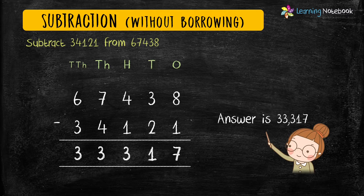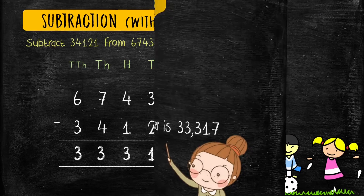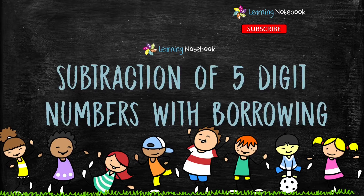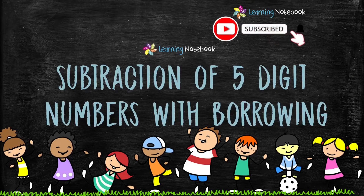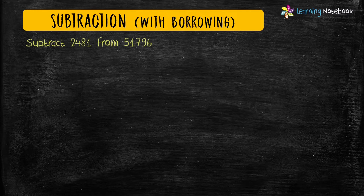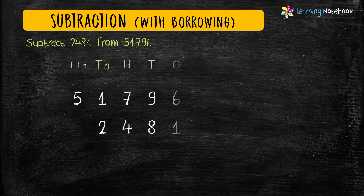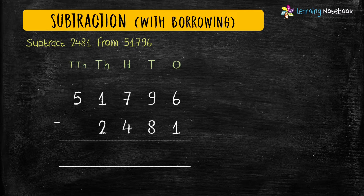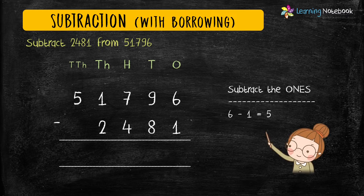This is how we do subtraction of five-digit numbers without borrowing. Now let's learn how to do subtraction of five-digit numbers with borrowing. The question is: subtract 2,481 from 51,796. To subtract these numbers, first we will write them in columns. Now we will start subtracting from the one's place: 6 minus 1 equals 5.